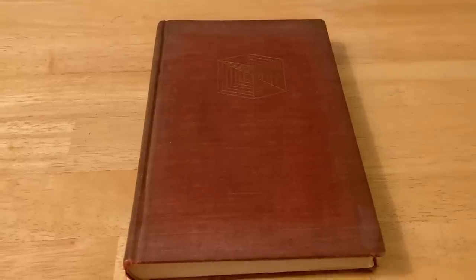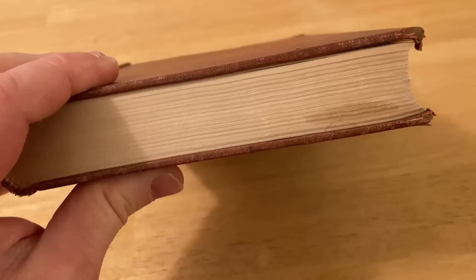This is an amazing book. This book is called What is Mathematics? And it was written by Courant and Robbins. There's nothing I can say in this video that really explains how great this book is. This book should be like required reading for every mathematics major in the entire world.